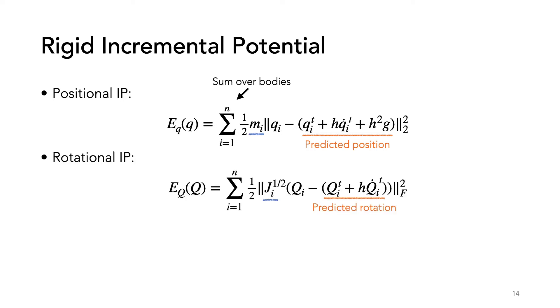The rotational IP looks very similar, but we use the Frobenius norm because the rotation is a matrix. We add these two potentials to get our rigid potential. For simplicity, I left out external forces and torques, but both of these can be included and details are provided in the paper.